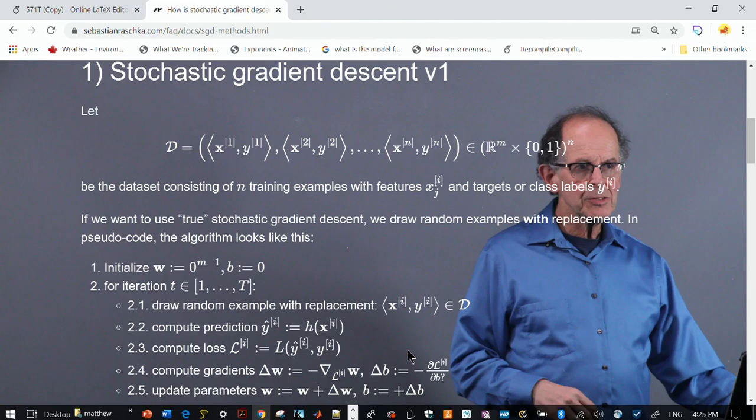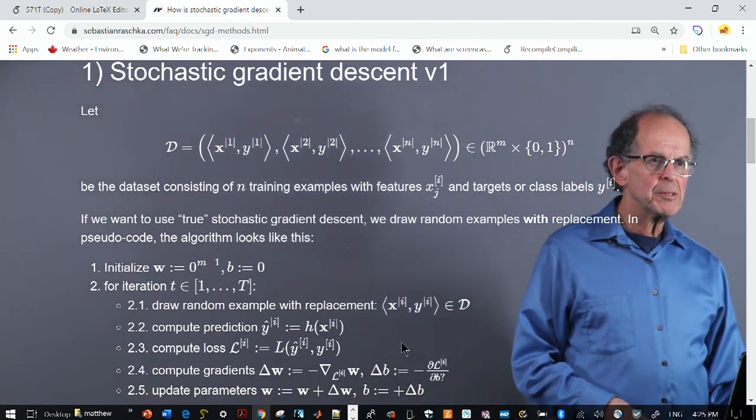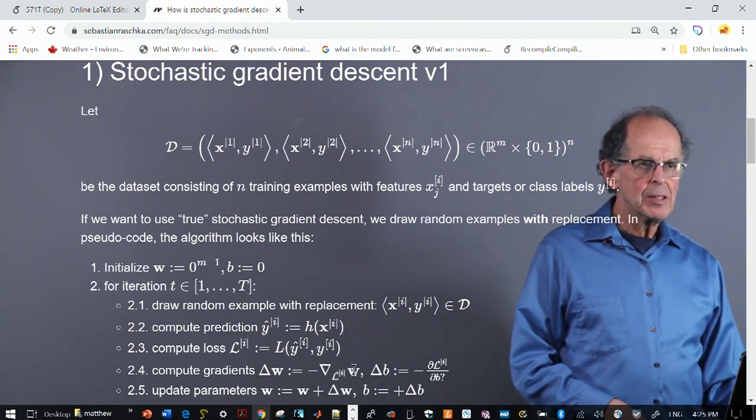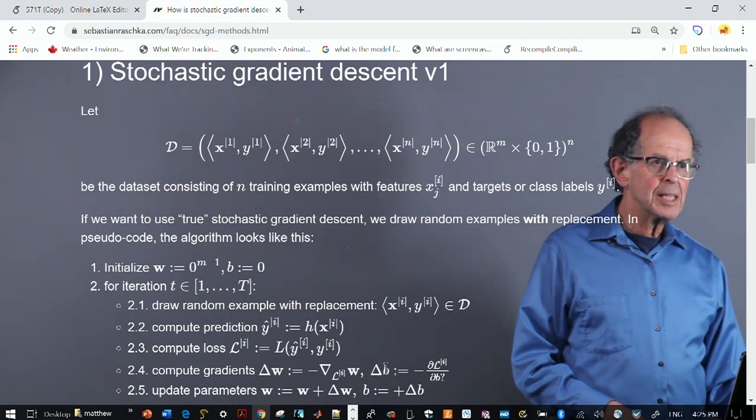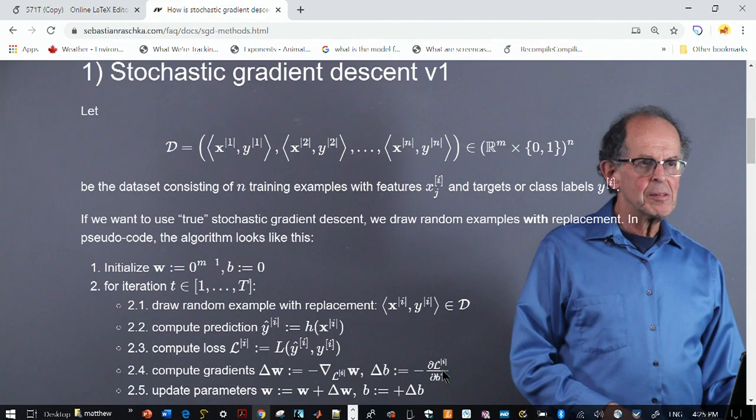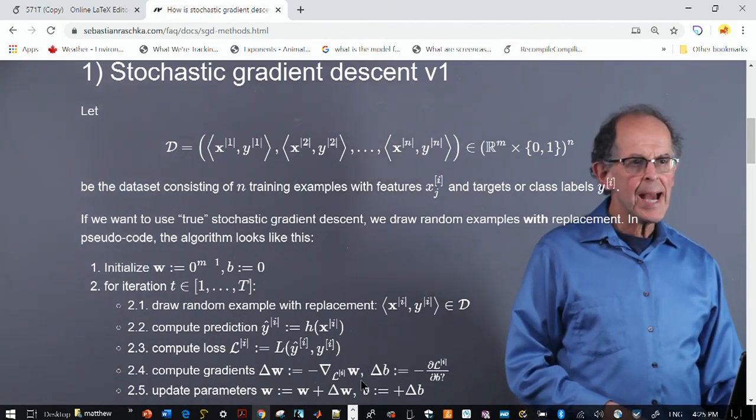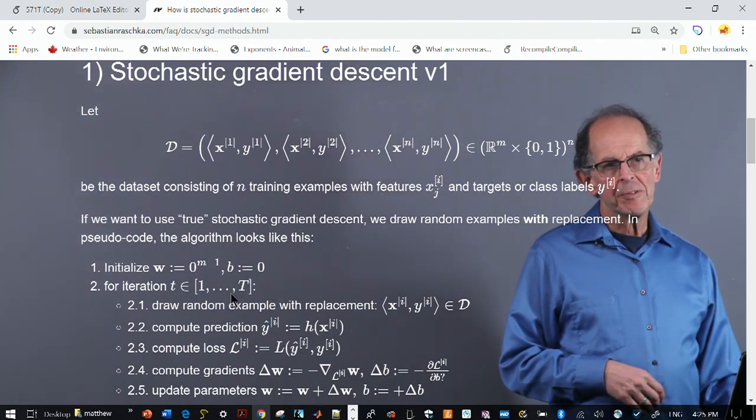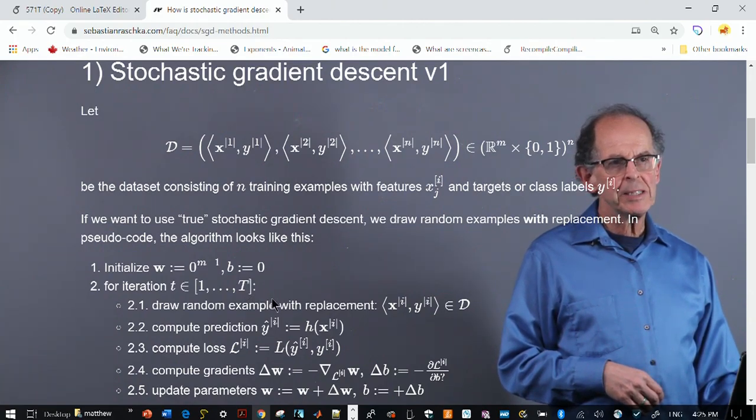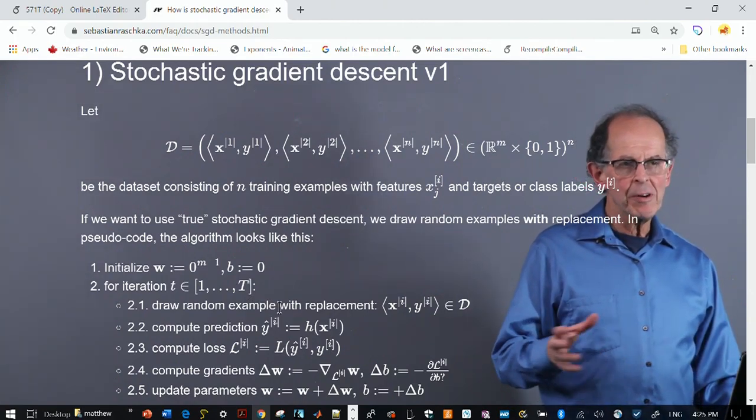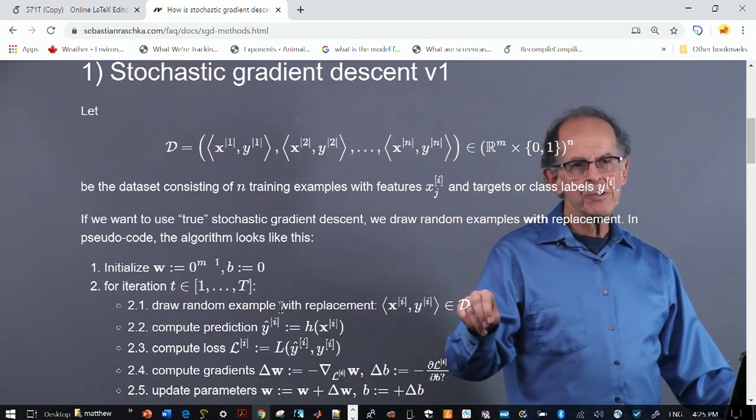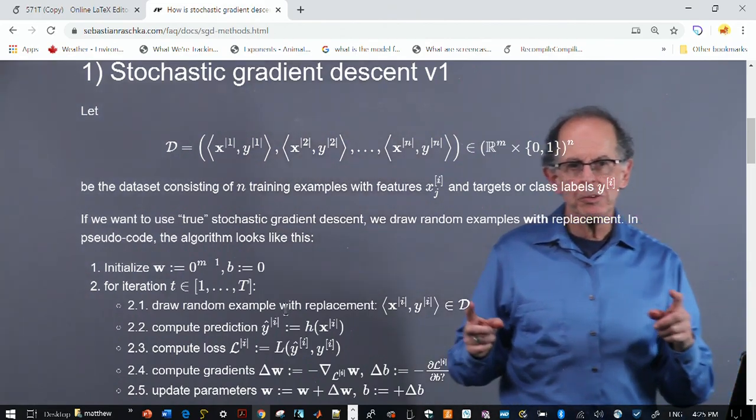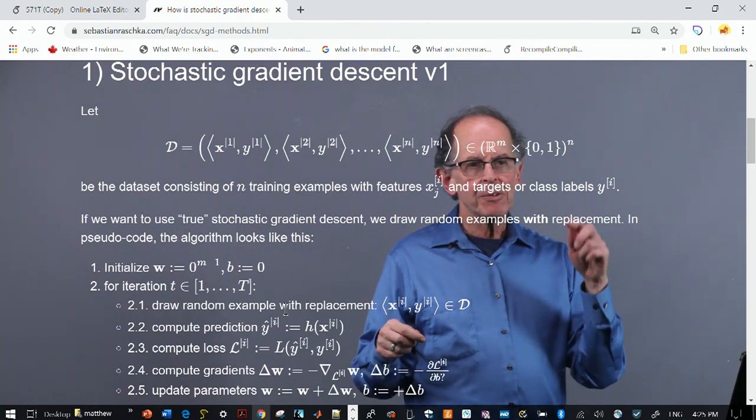You compute the prediction through your net, compute the loss, and then do the gradient update, which we've covered before. Delta W is minus the gradient of L with respect to W, and then delta B is equal to the derivative of L with respect to B. Then you add the increments to W to update them, and then repeat for the next iteration.